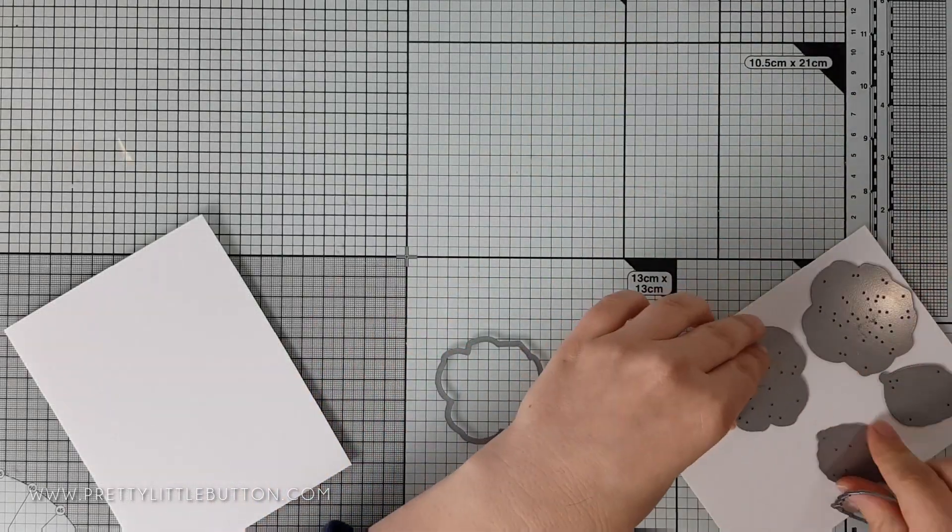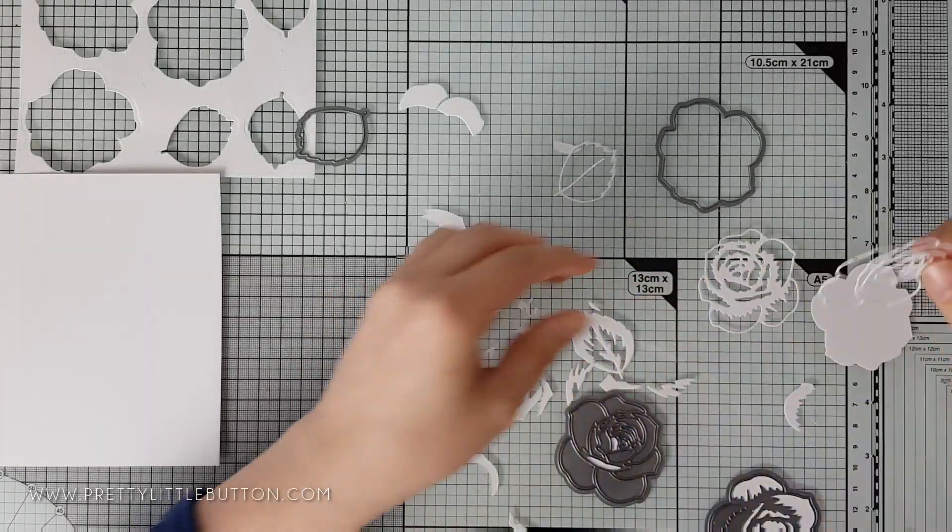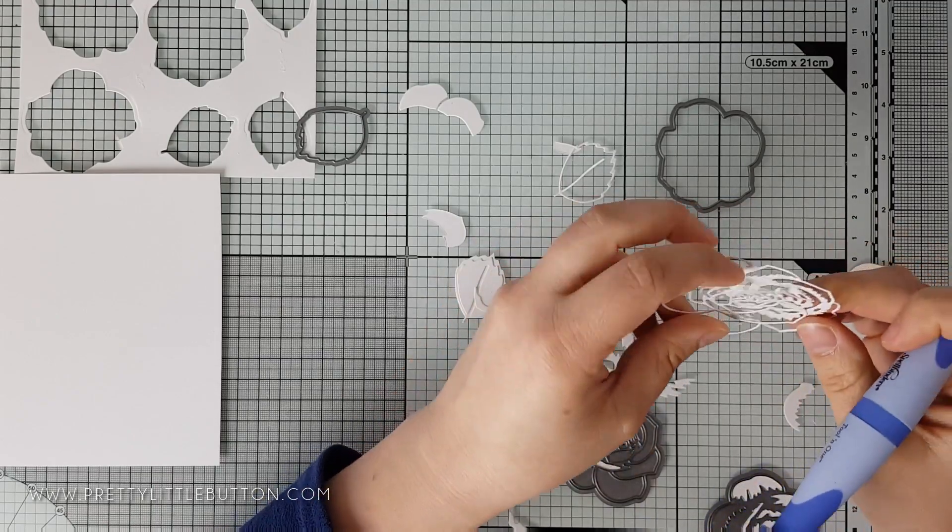To create the colored floral die cuts, I tape down the dies onto a piece of Neenah Classic Crest Solar White 80-pound cardstock and I run this through the machine to cut the shapes out.